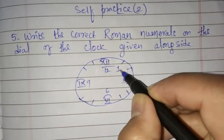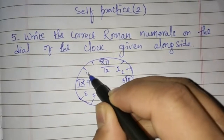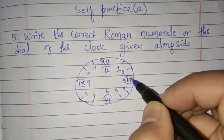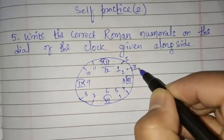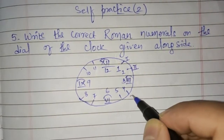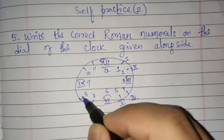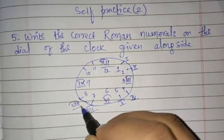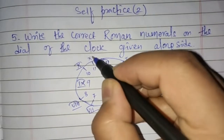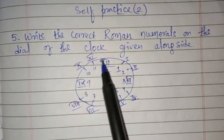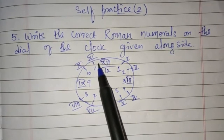After 12, what comes? 1, after 1 comes 2, 3, 4, 5, 6, 7, 8, 9, then 10, 11. So you have to write the correct Roman numeral on this dial. 1 is represented as I, 2 as II, 3 as III, 4 as IV, 5 as V. After 6 comes 7, which is VII. 8 is represented as VIII, then 9 as IX, 10 as X, and 11 as XI. This is the correct representation of the dial in Roman numeral form.